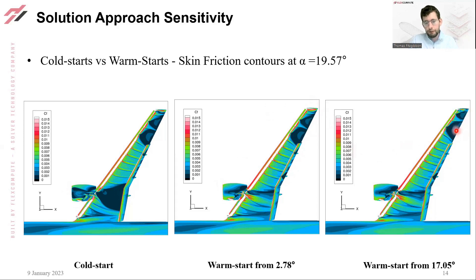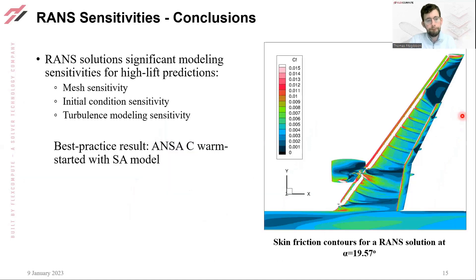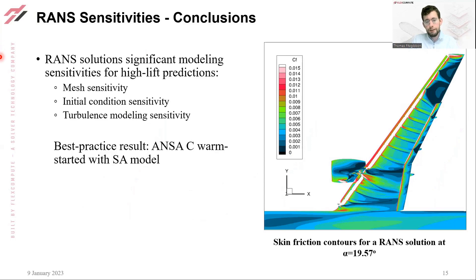The warm started solution from 17.05 degrees shows reduced separation from a more outboard slat bracket. Based on the results shown, RANS predictions exhibit a strong mesh sensitivity, and even at 200 million nodes the solutions are not fully mesh-converged. This is primarily due to the need to resolve all the flow-structure interactions in the inboard regions. There also appears to be a sensitivity to initial conditions, although these may have been exacerbated by the mesh. To further support our conclusions regarding the assessment of RANS for high-lift predictions, DES simulations will be analyzed in the next part of this video series.